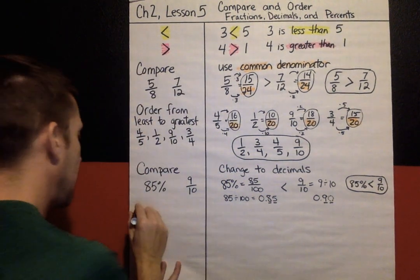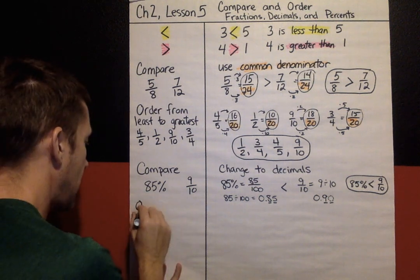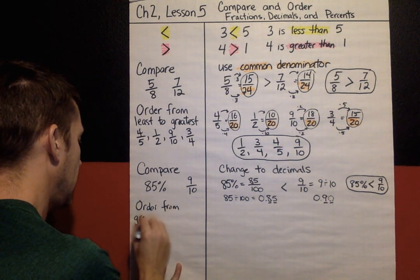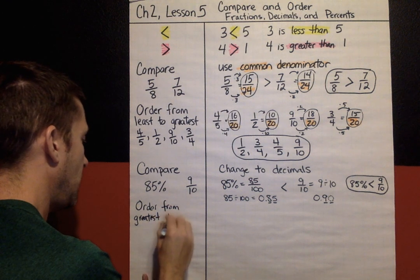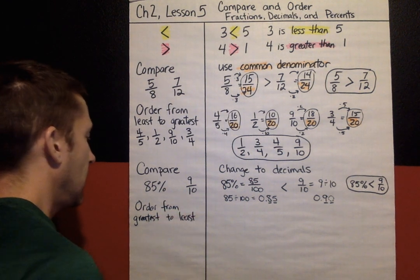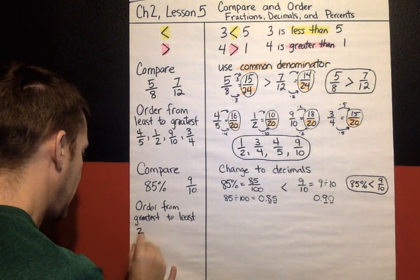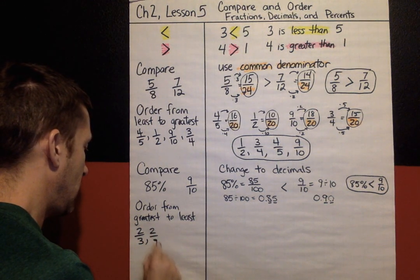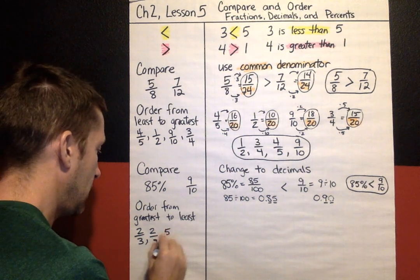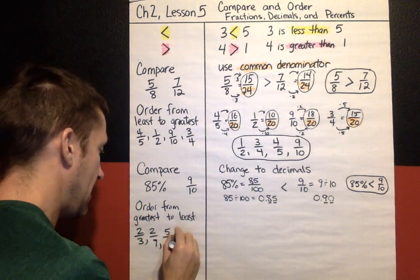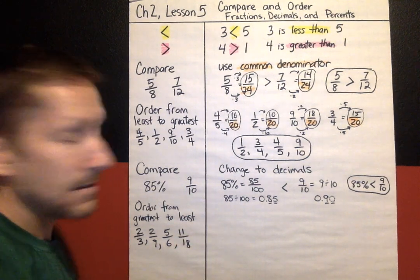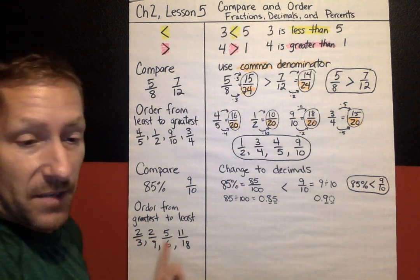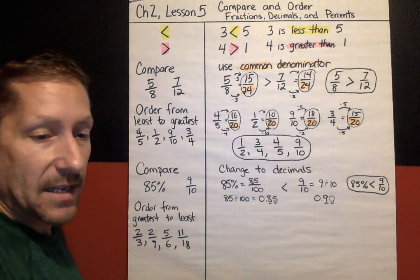One more — this time I'm going to order from greatest to least. The fractions I'm going to order are two-thirds, two-ninths, five-sixths, and eleven-eighteenths. I'm going to use the change-to-decimal strategy, dividing each fraction into a decimal and then comparing.